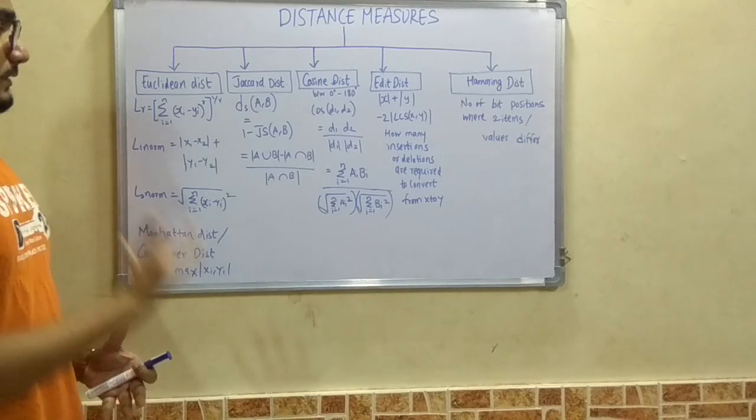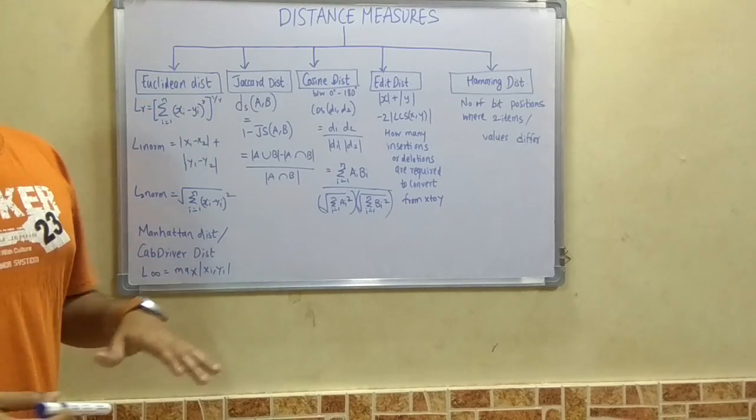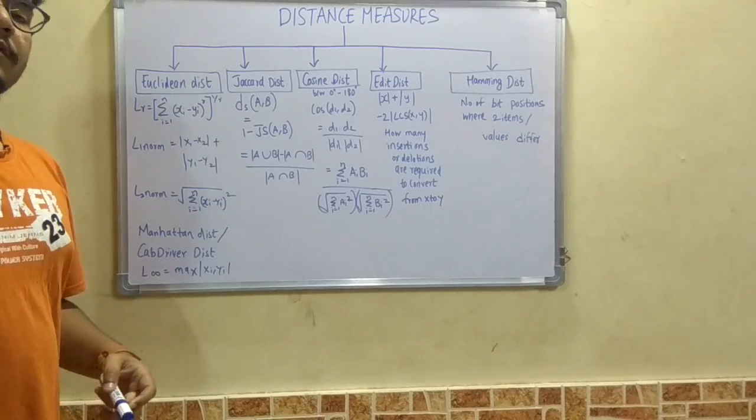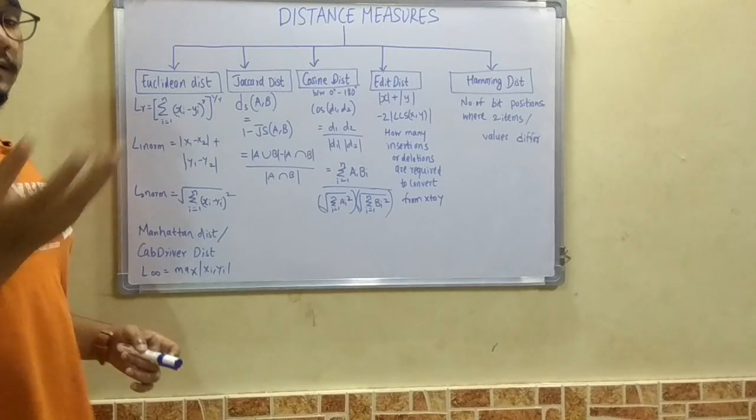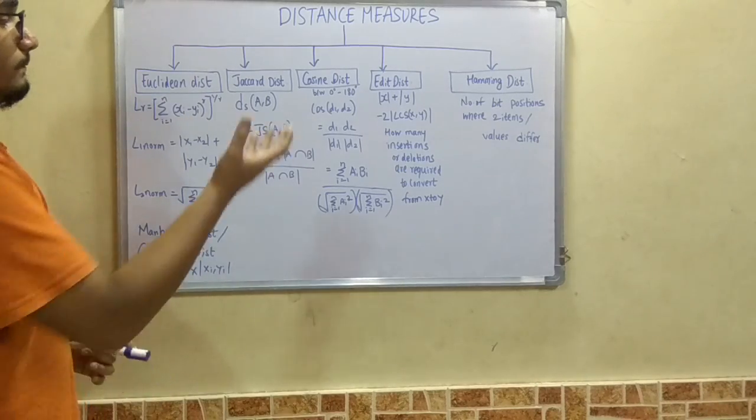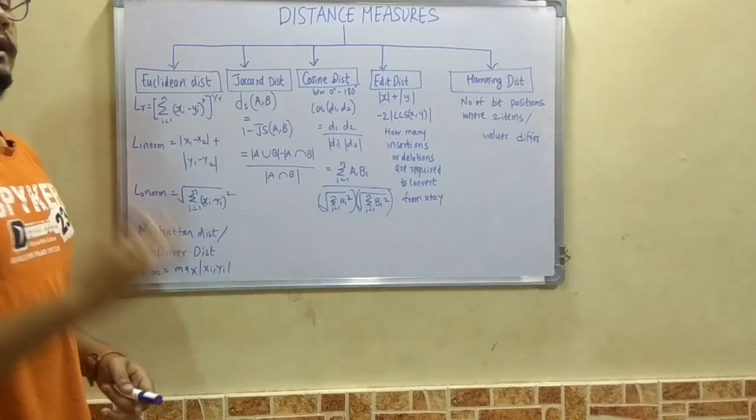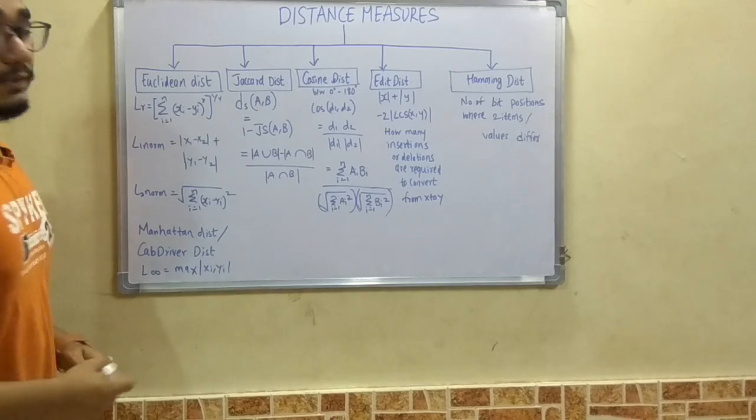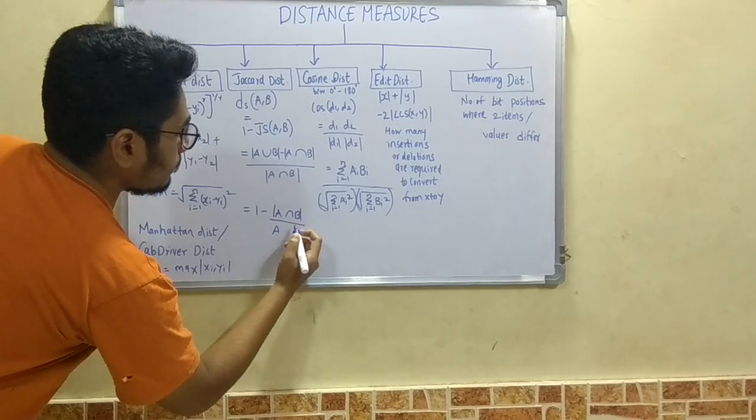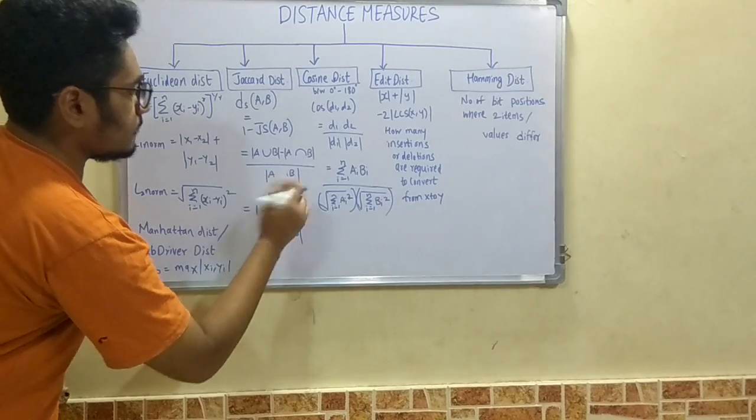Next we move on to Jacquard distance, which is a distance measure given by a scientist named Jacquard. The distance between two points a and b is given as 1 minus Js, where Js is the Jacquard similarity. In set theory, it is represented as (a union b minus a intersection b) upon mod of (a intersection b). This can also be summarized as 1 minus (a intersection b) upon (a union b).